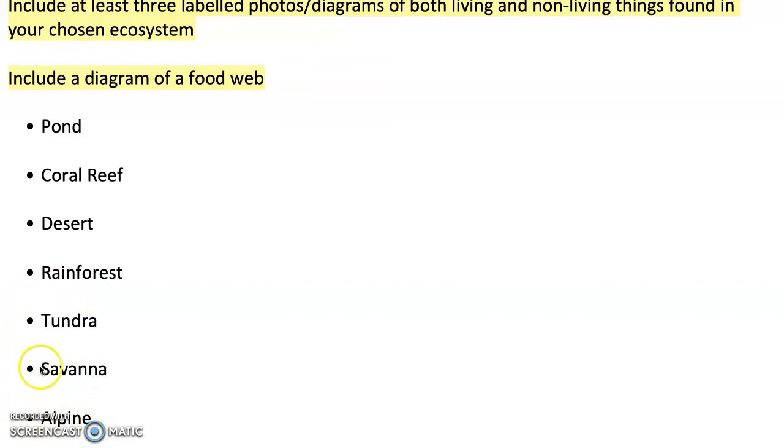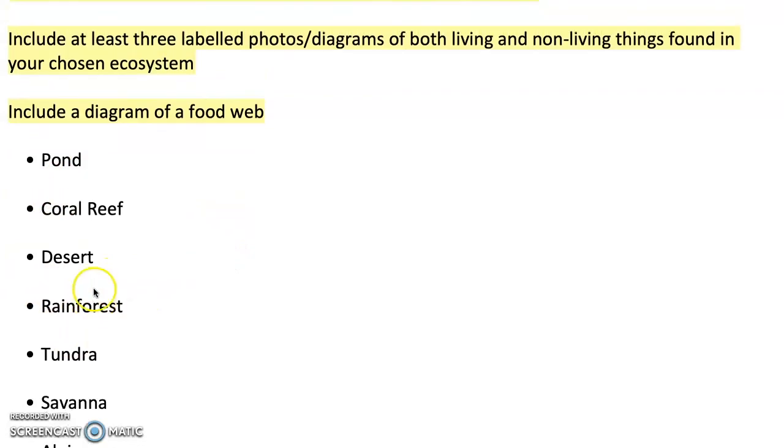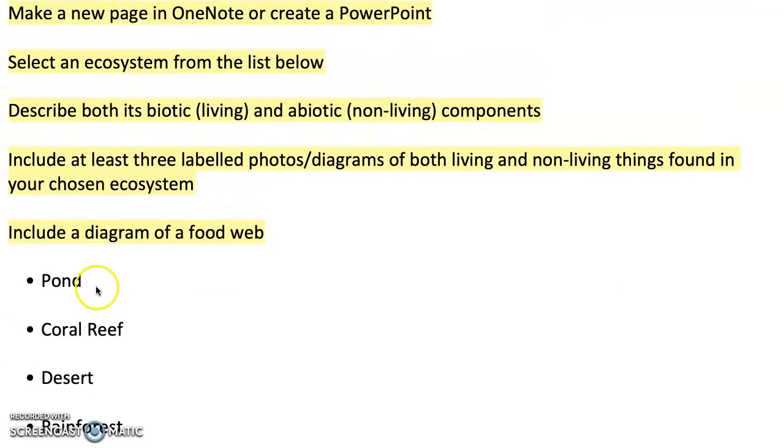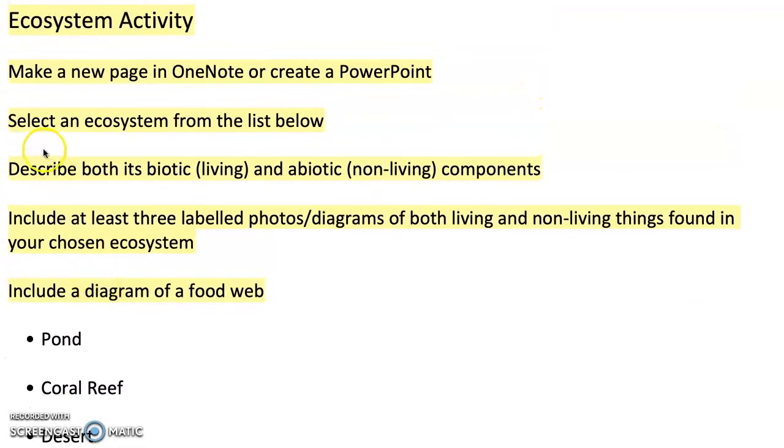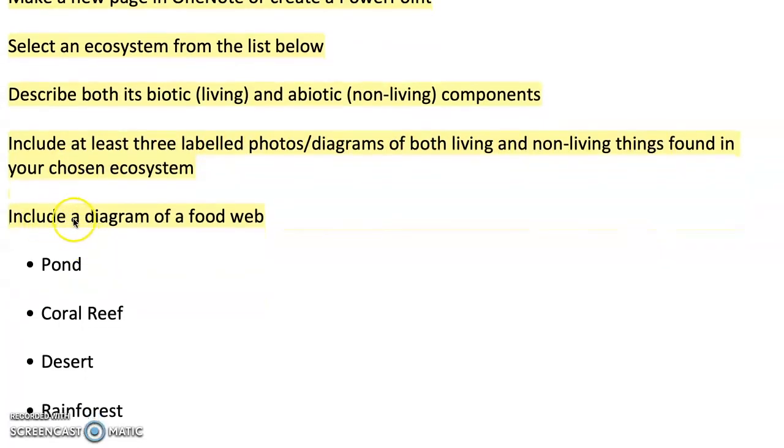You can be very specific, so you could pick the Great Barrier Reef or the Amazon rainforest, or you could just look at them in general. What I would like you to do is describe both its biotic and abiotic components. Include at least three labeled photos or diagrams of both living and non-living things found in your chosen ecosystem, and include a diagram of a food web.